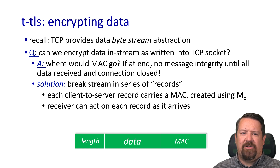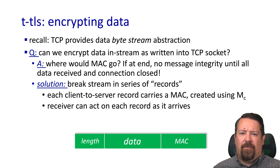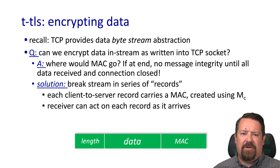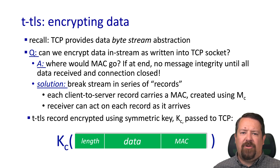TCP provides a byte stream abstraction — just a sequence of bytes going from one end of the connection to another. Rather than waiting for the entire stream to finish before decrypting and authenticating, we break the stream into a series of records or blocks. A known chunk size of data is sent, and the record carries along the message authentication code created using the master secret. The receiver can process these records as they arrive. Each record is encrypted using the symmetric key and then passed to TCP.